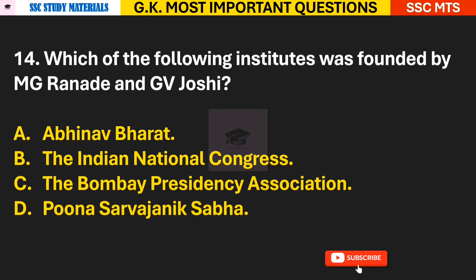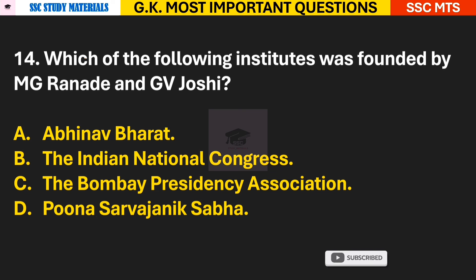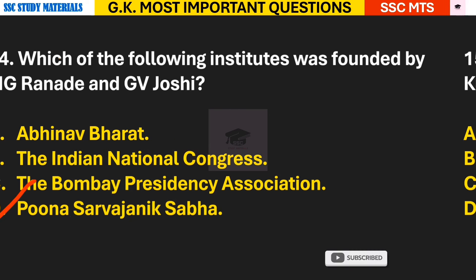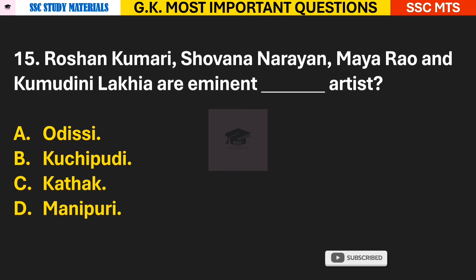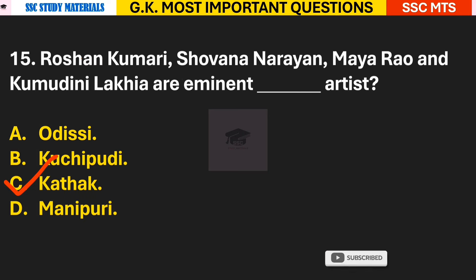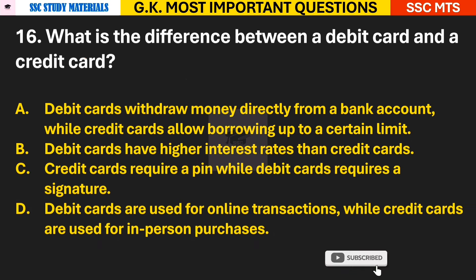Question 14: Which of the following institutes was founded by M.G. Ranade and G.B. Joshi? Answer D — Poona Sarvajanik Sabha. Question 15: Roshan Kumari, Shobana Narayan, Maya Rao, and Kumudini Lakhia are eminent artists of which dance form? Answer C — they were Kathak dancers.